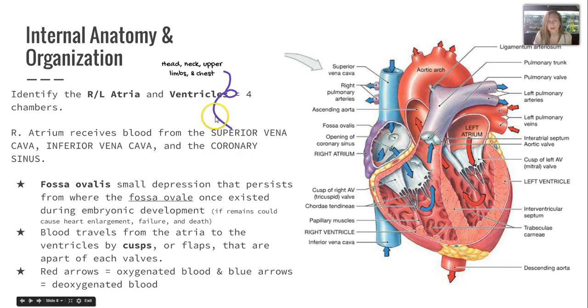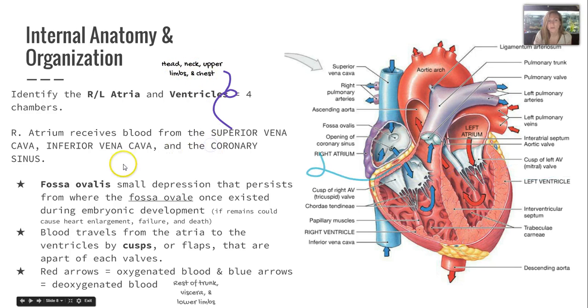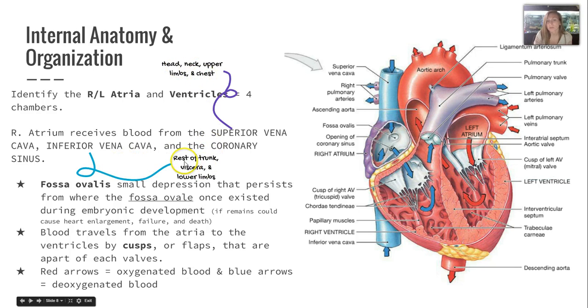The superior vena cava brings blood from the head, neck, upper limbs, and chest, while the inferior vena cava brings blood from the rest of the trunk, the viscera, and the lower limbs.